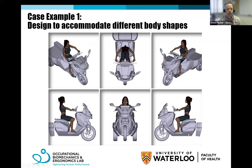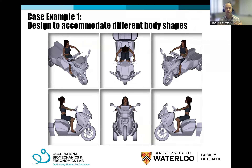The first case example involves an electric scooter design project. As the world moves to sustainable energy, we worked with a company designing an electric scooter that needed a certain payload, powered by batteries underneath a trailer. Given the diversity of potential users, it was important to understand how different anthropometric body shapes and sizes could impact the design.